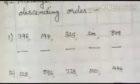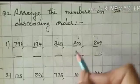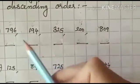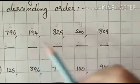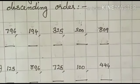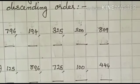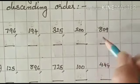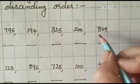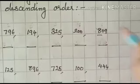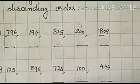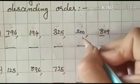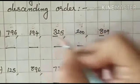Here, arrange the numbers in descending order. Descending order means bigger to smaller. You have to look at the hundreds place and find which number is the highest. Here, the highest at the hundreds place is 8, then 7, then 3, then 2, and then 1.